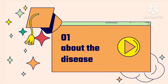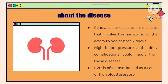Renal vascular disease, or RVD, involves the narrowing of the artery to one or both kidneys. These diseases often result in high blood pressure and kidney complications. RVD is often overlooked because of the high blood pressure — the diagnosis would usually be recorded as high blood pressure instead of renal vascular disease.